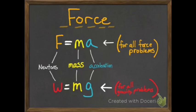F equals MA is an equation we can use for all force problems. W equals MG is for all gravity problems — whenever you're talking about something falling, we're going to use W equals MG. Whenever we're talking about an object being pushed or pulled by something or someone, we'll use F equals MA. But those two equations really can both be used in either case.